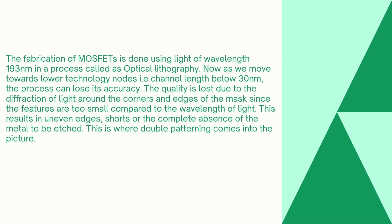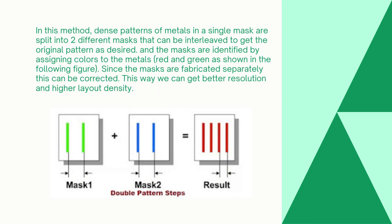This is where double patterning comes into picture. As we go towards lower technology nodes, there are certain limits of wavelength, and because of that double patterning is needed. In this method, we use two masks — mask one and mask two. A dense pattern of metal in a single mask is split into two different masks that can be interleaved to get the original pattern as desired. The masks are identified by assigning colors to the metals, red and green, as shown in the following video.